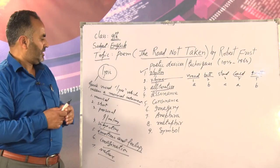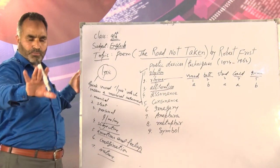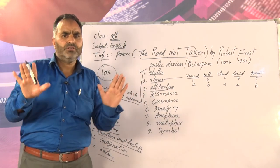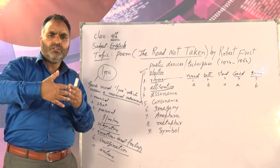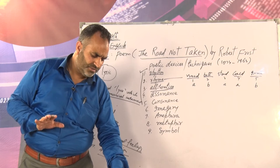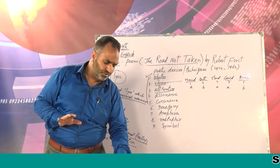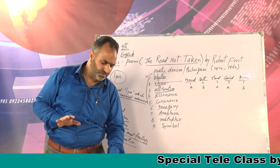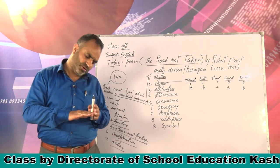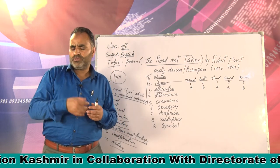Rhythm, rhyme, alliteration, assonance, consonance — these devices are for creating music in a poem. Assonance means repetition of vowel sounds. It is not necessary that the poet repeats at the initial level — it can be in the middle or the end. If you see stanza one: 'stood,' 'could,' 'would,' 'growth,' 'both,' 'fair,' 'air,' 'claim,' 'same' — you have the same vowel sounds. In 'claim' and 'same' you have the 'A' vowel sound. In 'stood' and 'could' you have the 'U' vowel sound. That means there is assonance.